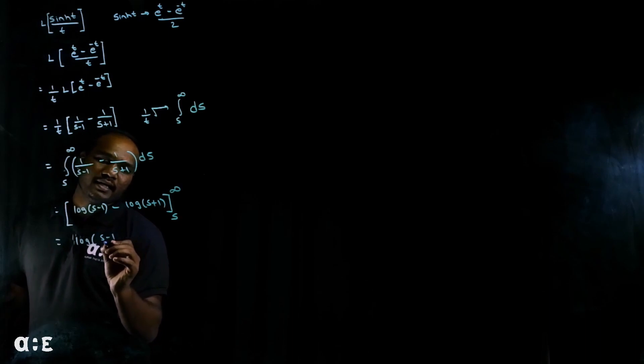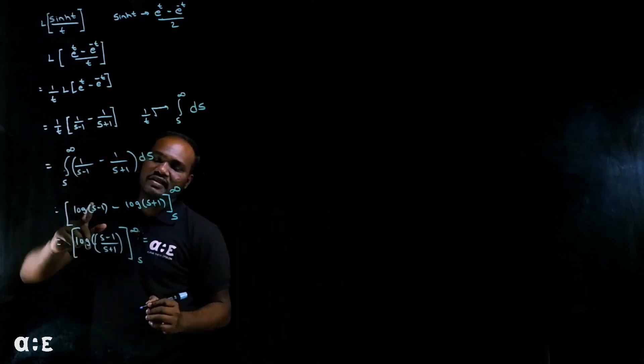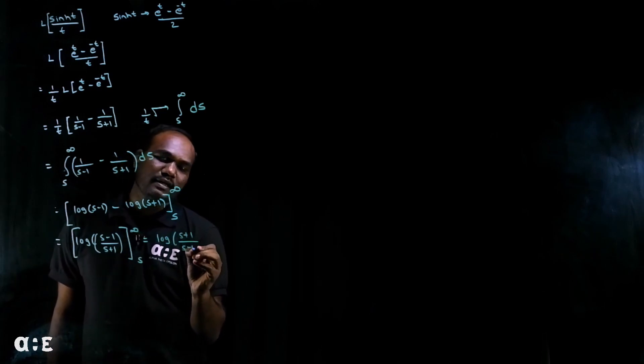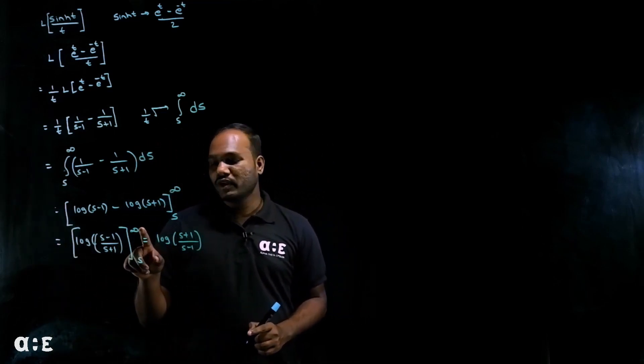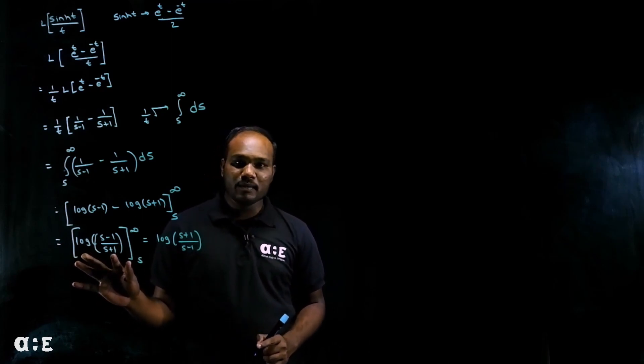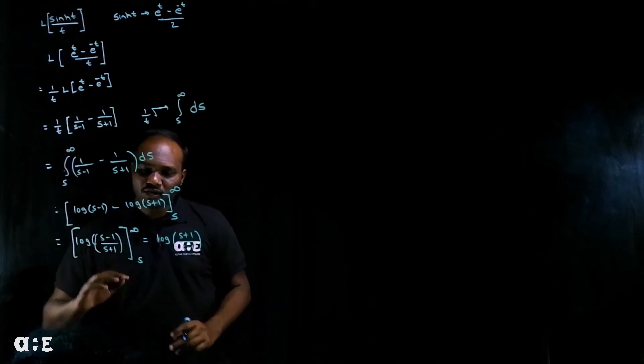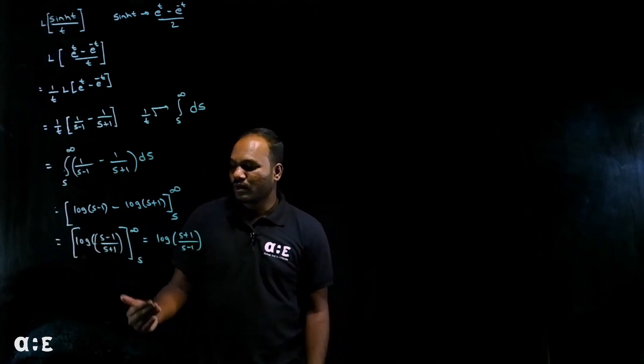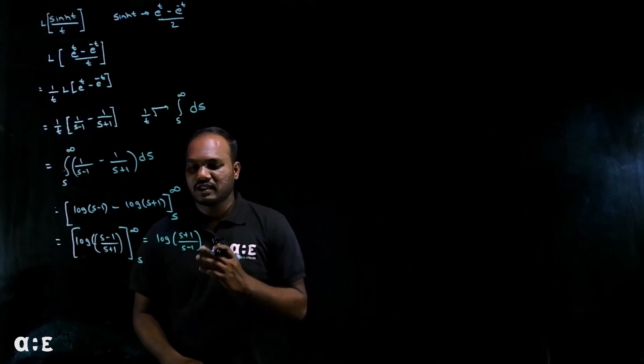We can also write this as log a minus log b is log a over b. After this step, s to infinity, directly reverse this function and that is log of s plus one over s minus one. Whenever we substitute infinity, this whole term will become zero minus the s term. So just remember, whenever we substitute limits, it will flip out. So let's go to the next question.